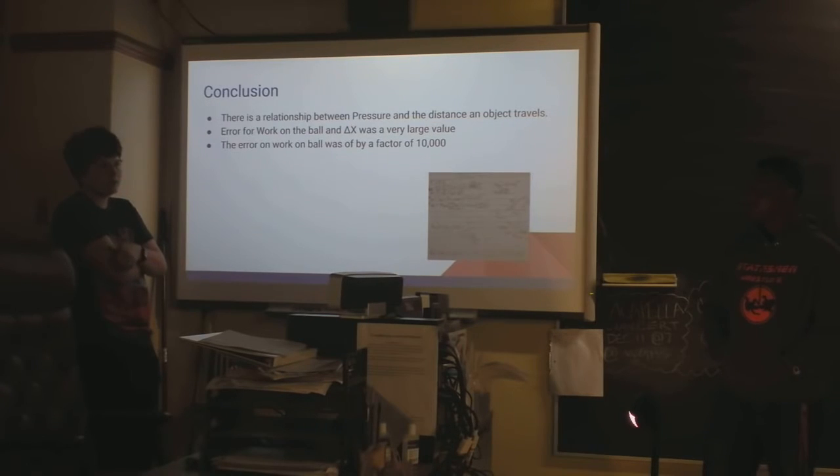Basically, in our experiment, we didn't look for the direct relationship. But what we did was we used equations to find it instead of finding a direct one. If we would have graphed those two, we would have found, we would have had to use an equation. But in our experiment, we didn't look for that equation. We used a whole series of equations to find a link. And the error for work on the ball in Delta X was 99%, extremely large, a factor of 10,000.